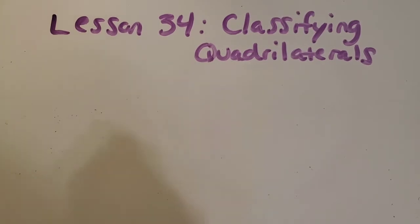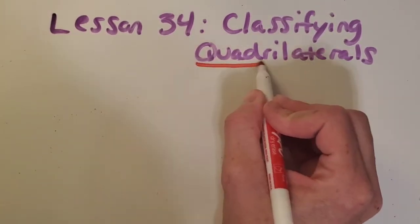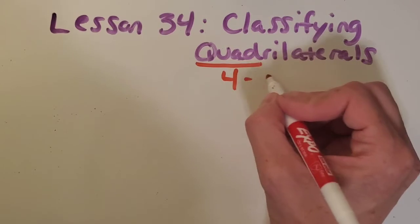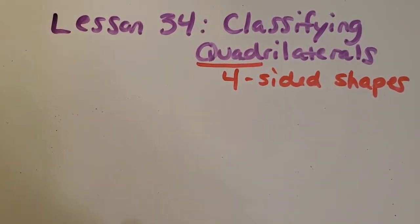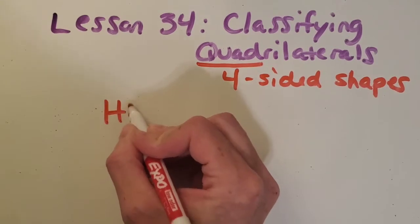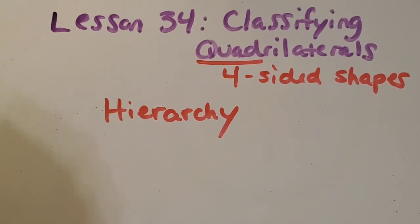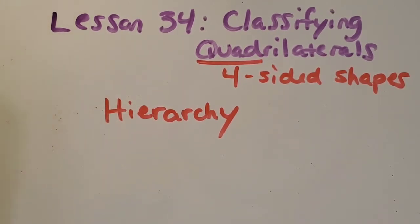First things first, we need a little bit of vocabulary. The word quadrilateral — if we look at the first part of the word, quad, that means four. So we're going to be talking about classifying four-sided shapes in this lesson. We also need to learn about the word hierarchy, which is probably a new vocabulary word for you. All it means is a way of classifying things where we start with the most broad word and get more and more specific as we go down on some branches. I'll show you an example before we move into shapes.